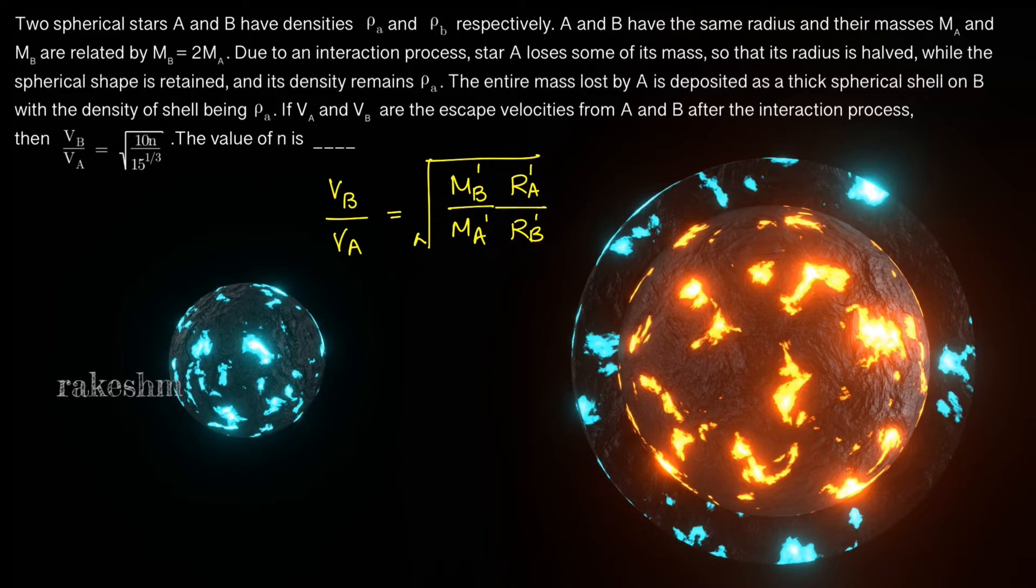Here M_A' and M_B' are the new masses of A and B, and R_A' and R_B' are the new radius of A and B. The new radius of A is R/2, and as mass is proportional to the radius cubed, the new mass of A becomes M/8.